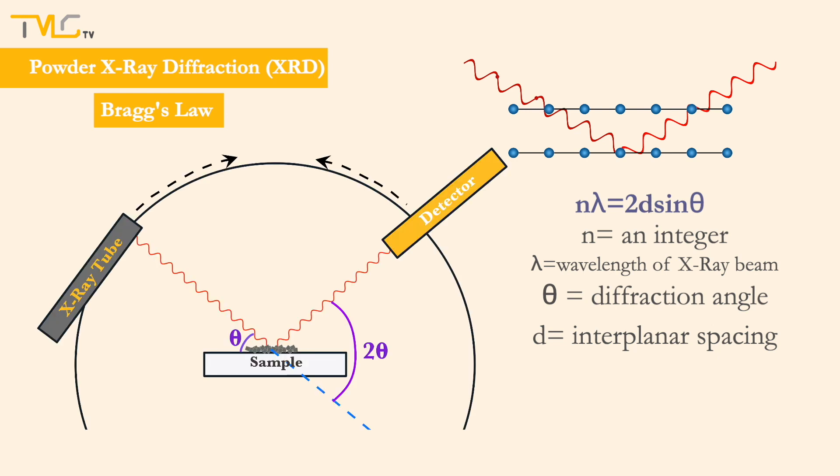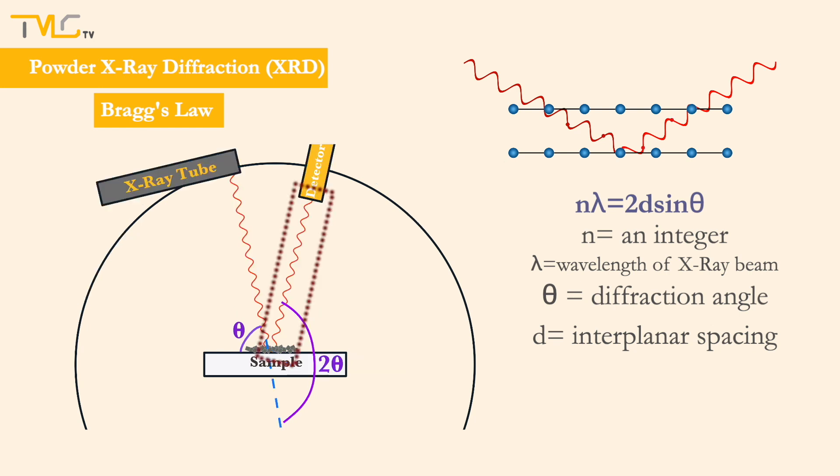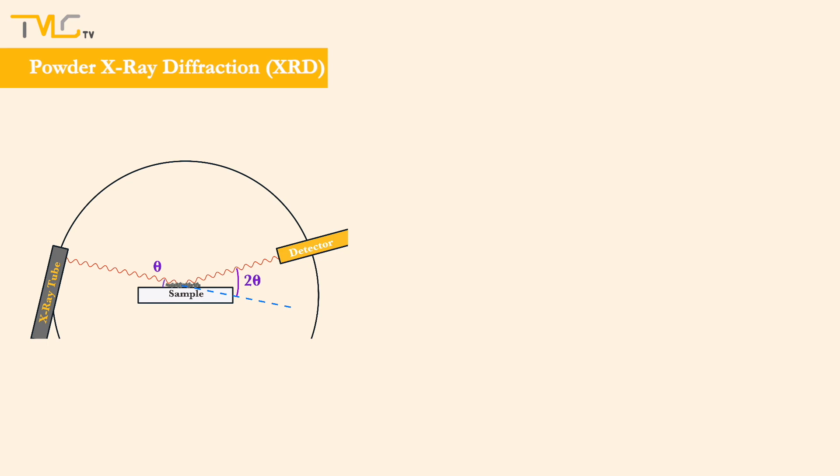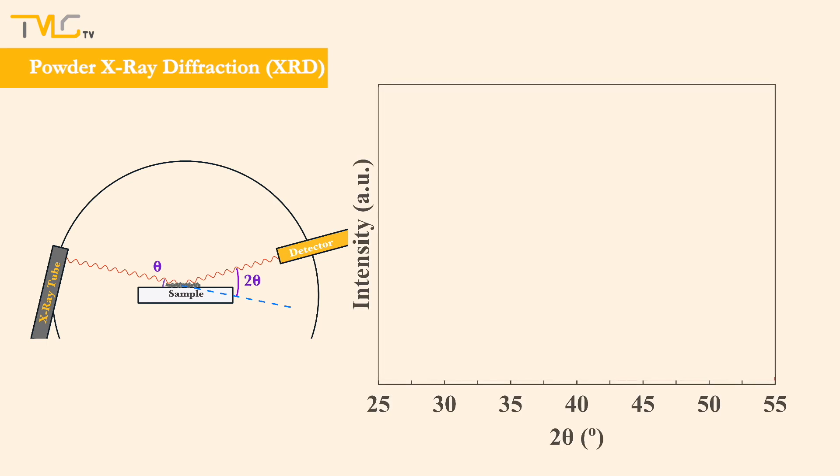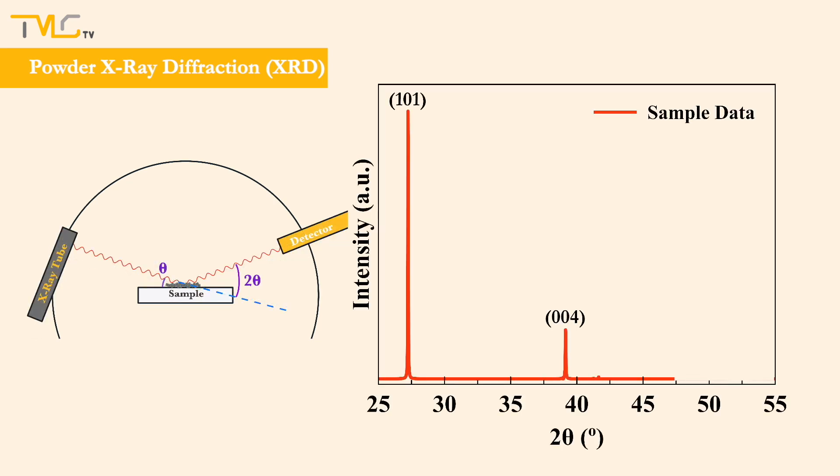During powder XRD testing, the primary beam scans the specimen between the operator-defined initial and final angle values at a constant scan rate. The diffracted beam is collected by the detector located in mirror symmetry of the X-ray tube and moves together with it, but in the opposite direction. The diffracted beam may hit the detector or not, depending on the crystal plane of diffraction. Diffraction peaks will be observed only for the crystal planes diffracting the beam successfully towards the detector.